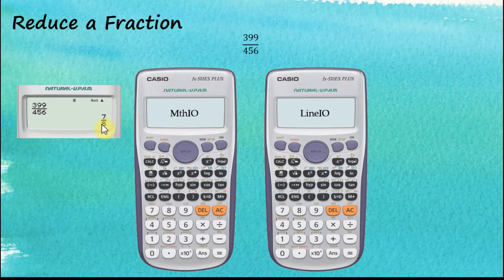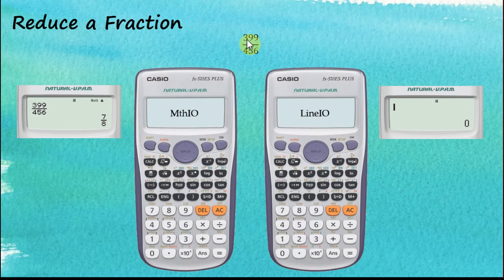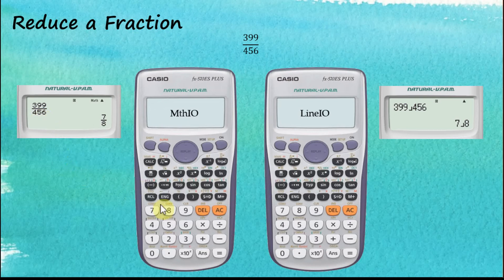For Linear input, we key in 399, then the fraction key, then 456, and press equal to get the answer. That's how we reduce fractions — key in the fraction and tap the equal button to get our simplified result.